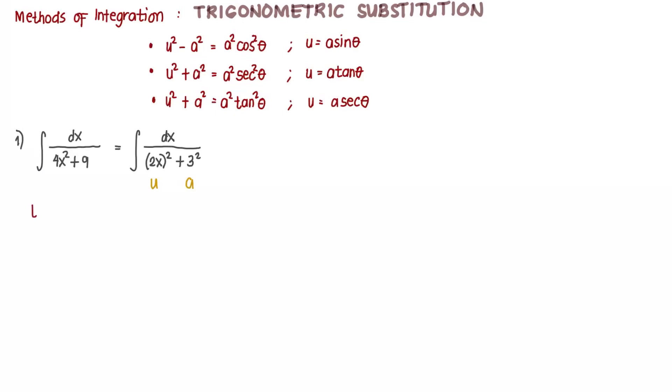So we let, because the pattern is u squared plus a squared, we let what is our u? u is 2x. So we let 2x equals 3 tangent theta.